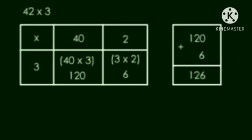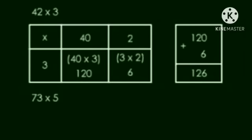So the answer is 126. Next, 73 into 5. We will split 73 as 70 plus 3.